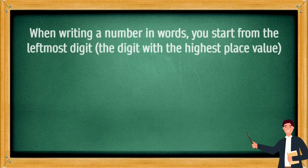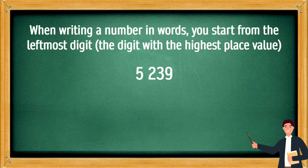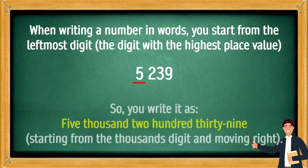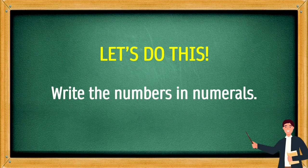When writing a number in words, you start from the leftmost digit — the digit with the highest place value. For example, 5,239: the leftmost digit is 5, so you write it as five thousand two hundred thirty-nine.